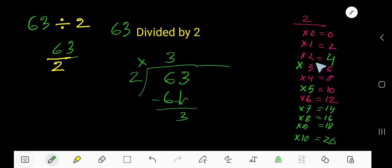Here, 1 times 2 equals 2, 2 times 2 equals 4, which is greater. So we have to stop here. 2 goes into 3, let's say once. 1 times 2 equals 2. Subtract to get 1.